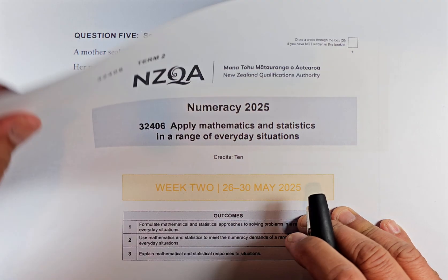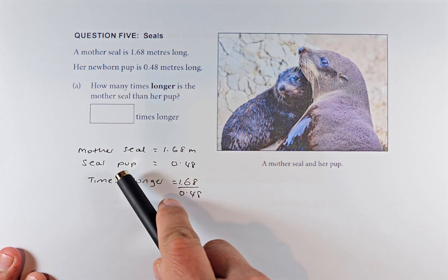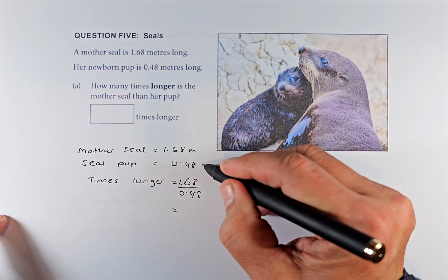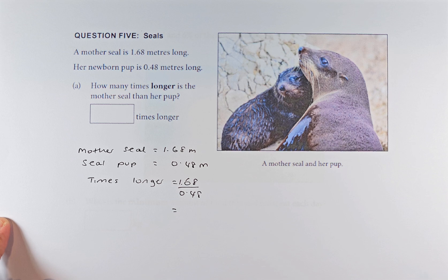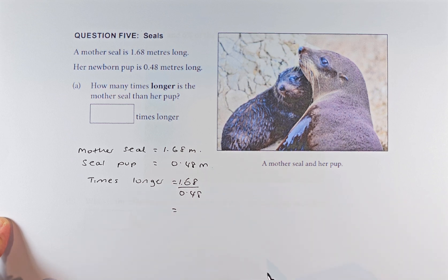So 5a sounds like this — this is a calculation type of question. A mother seal is 1.68 meters long and the newborn pup is 0.48 meters. How many times longer is the mother seal than her pup? So we need to take 1.68 divided by 0.48.